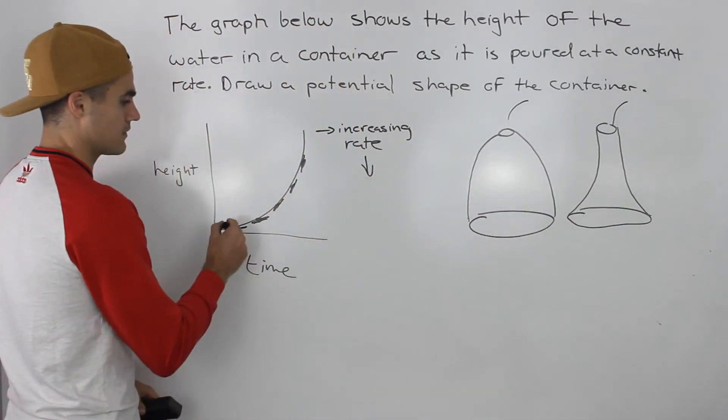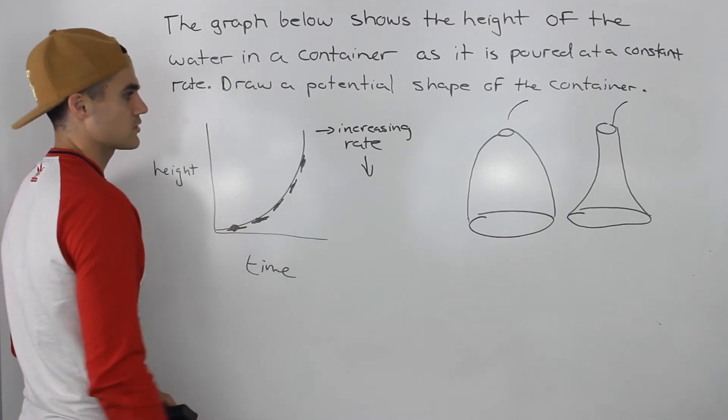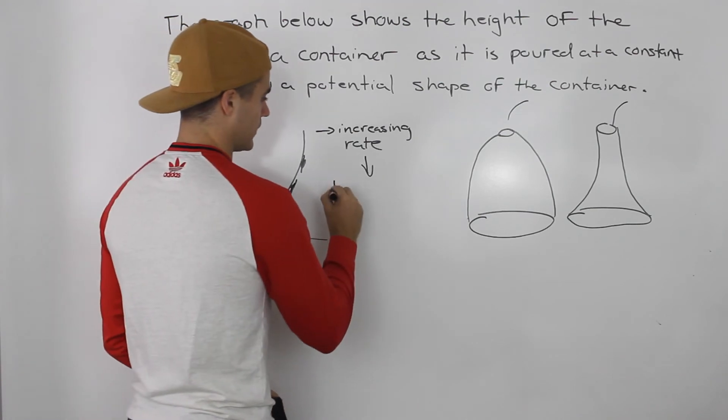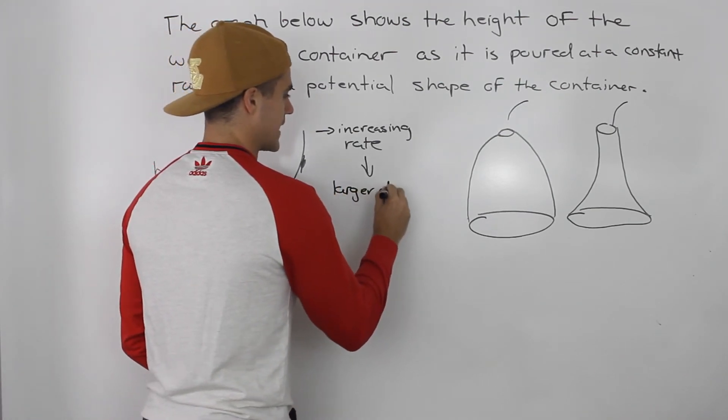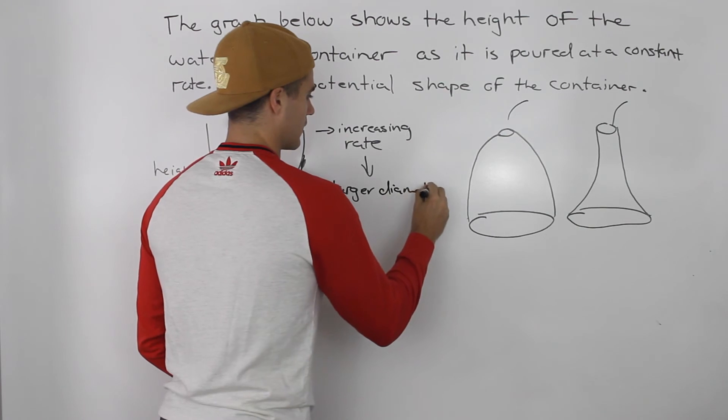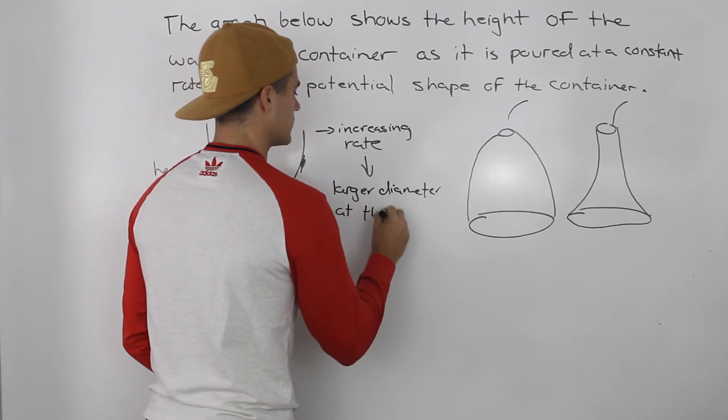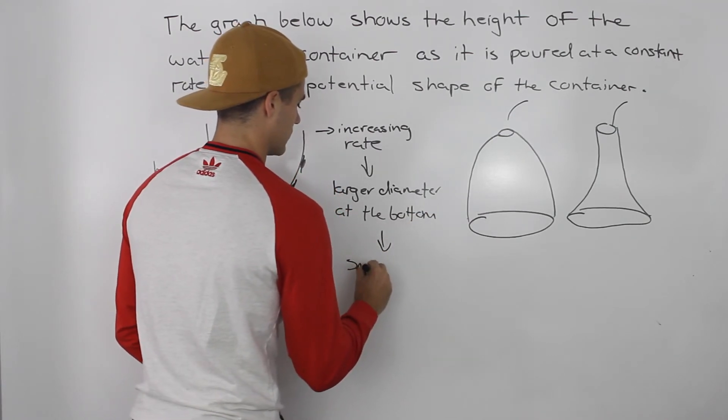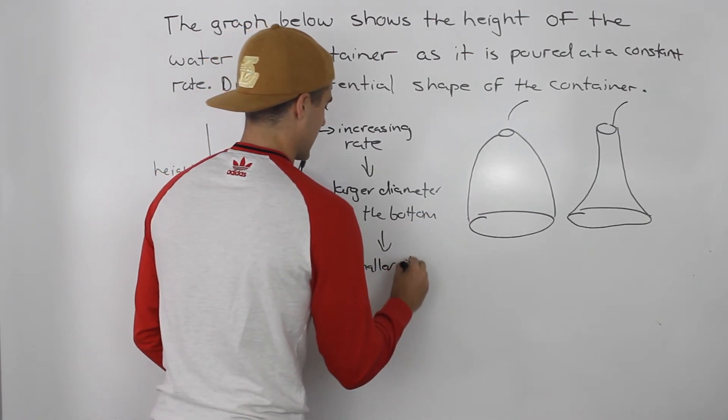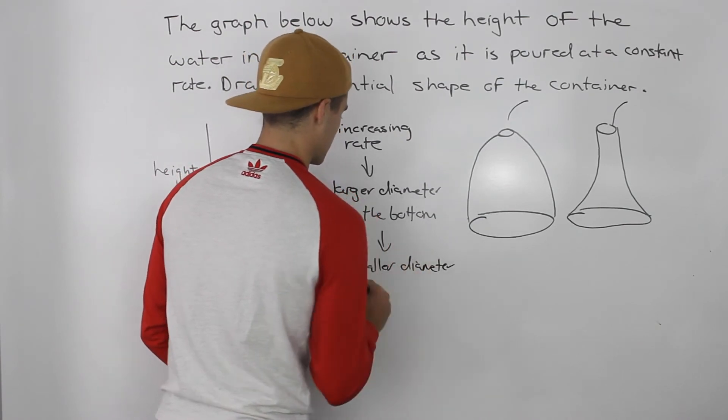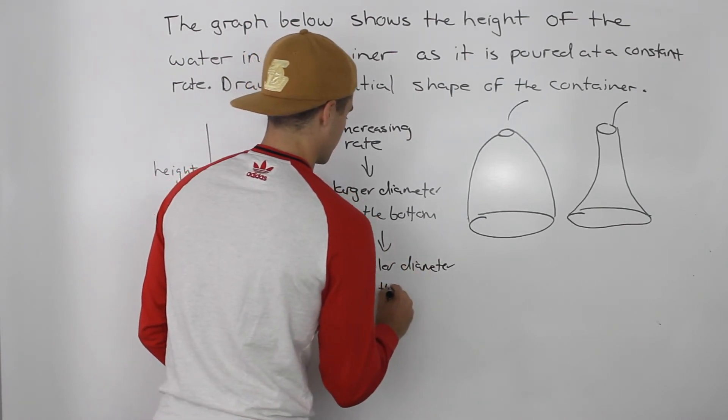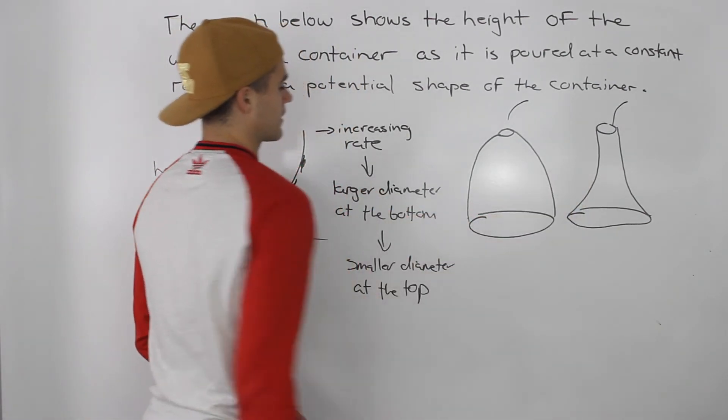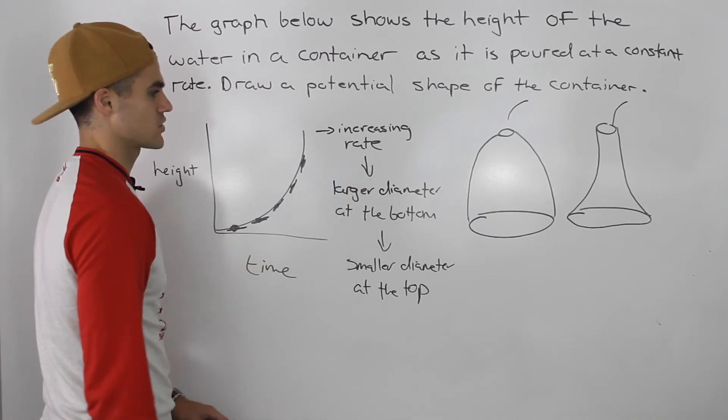So what's going to happen is that rate of change is going to go up. So if you want to describe this in words, we have a larger diameter at the bottom of the container, and a smaller diameter at the top. So both of these containers fit these descriptions.